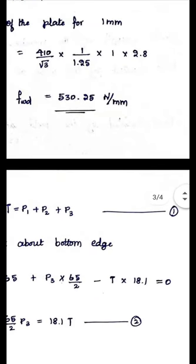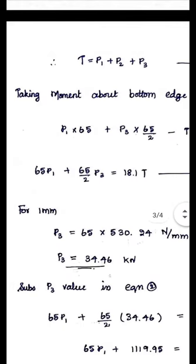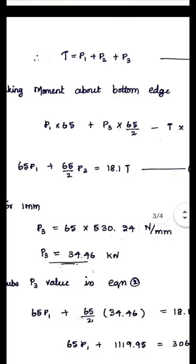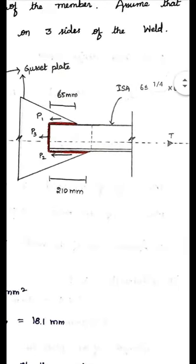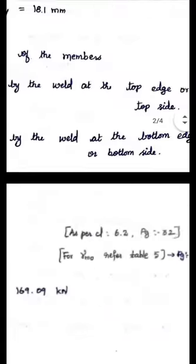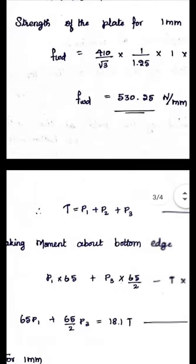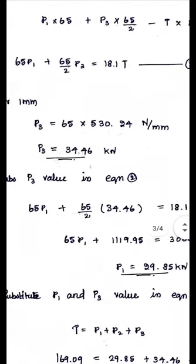Now calculate force P3. The weld at the end is provided for a length of 65 mm. For 1 mm length the weld resists 530.24 N, so for 65 mm: P3 = 65 × 530.24 N = 34.46 kN. Among the total load, the weld at the end (65 mm length) resists 34.46 kN.